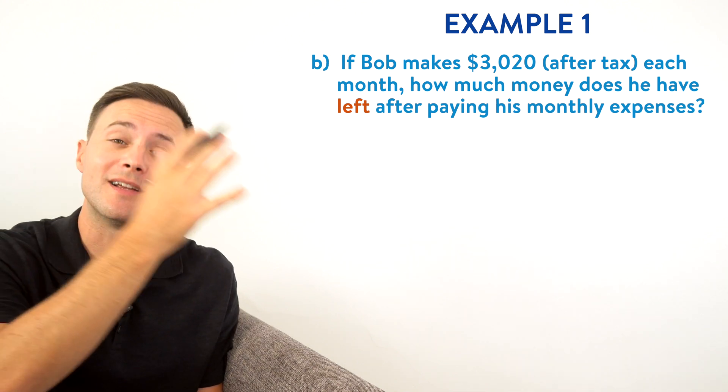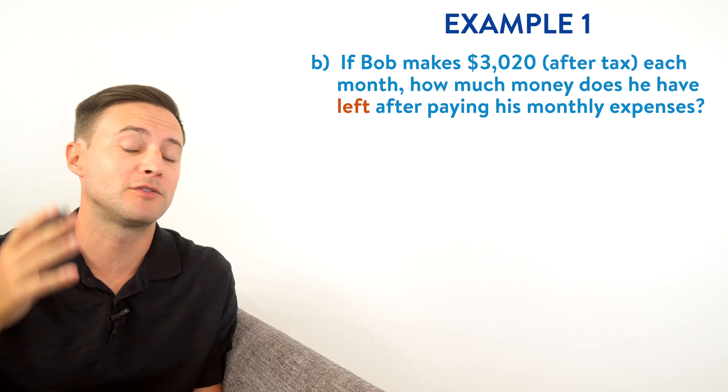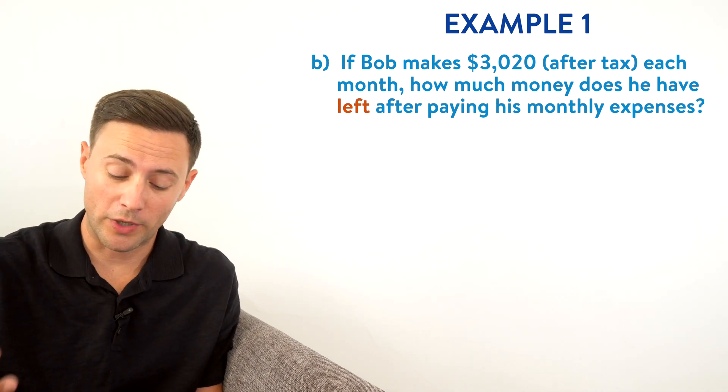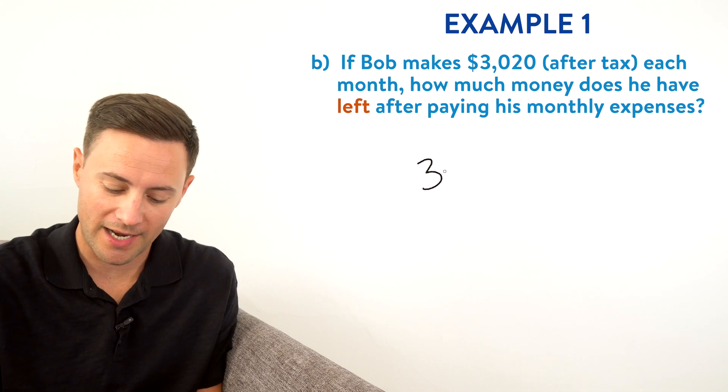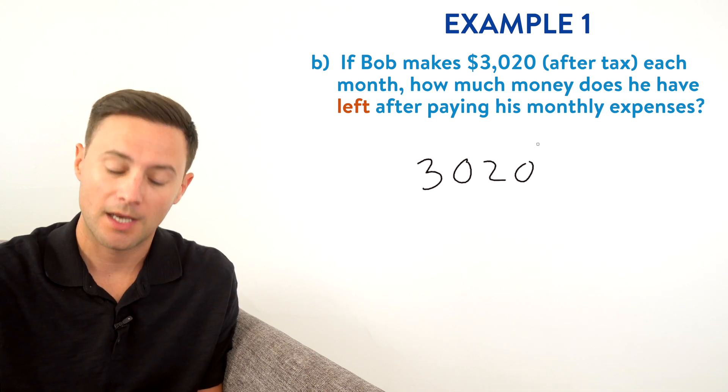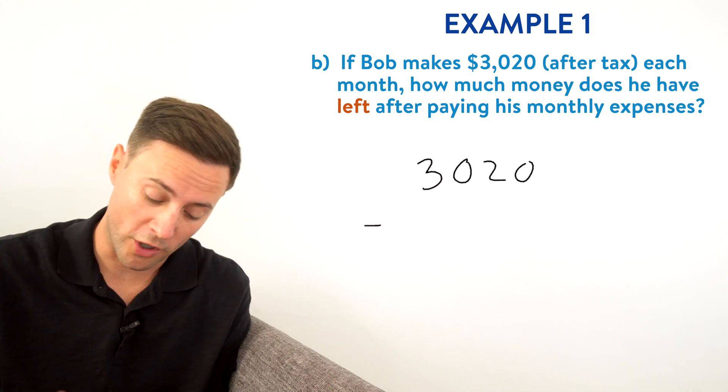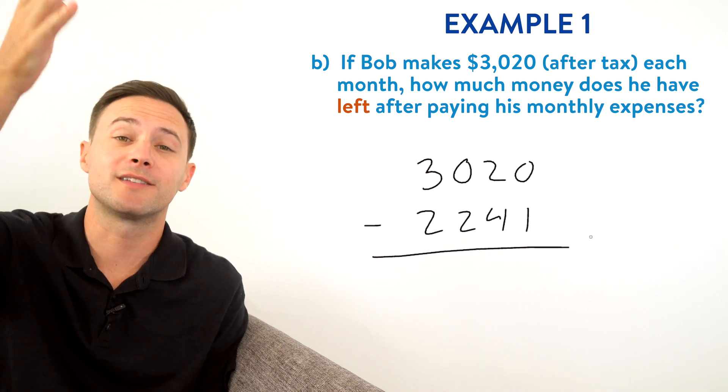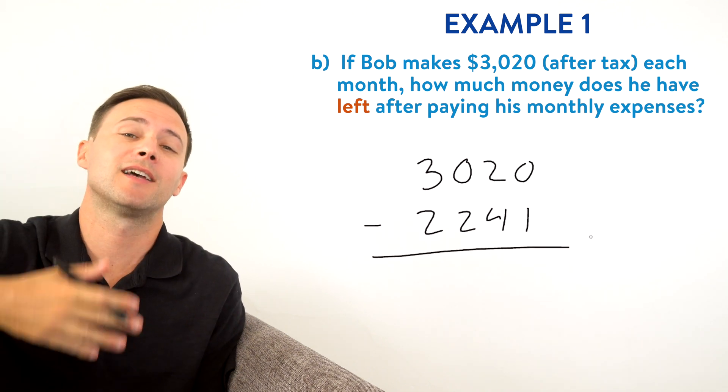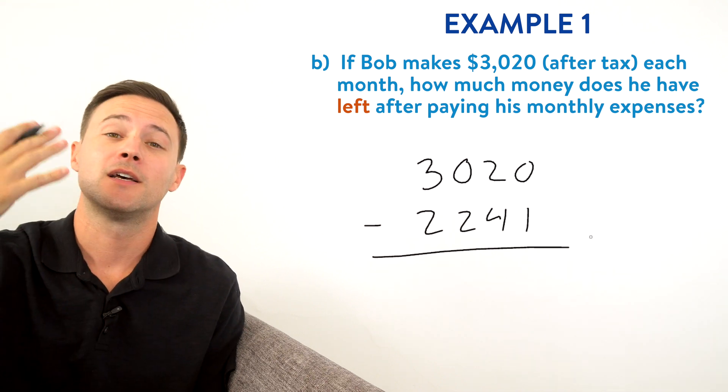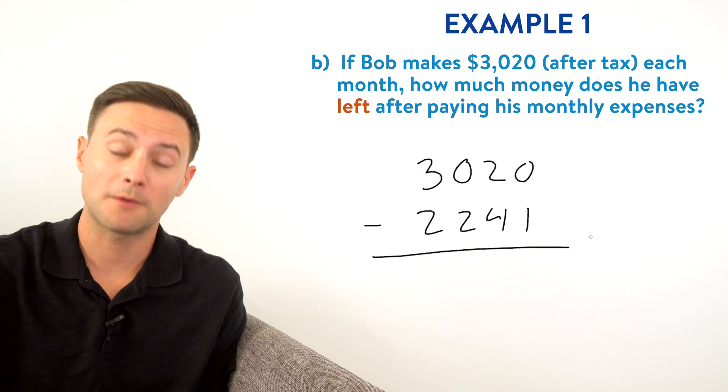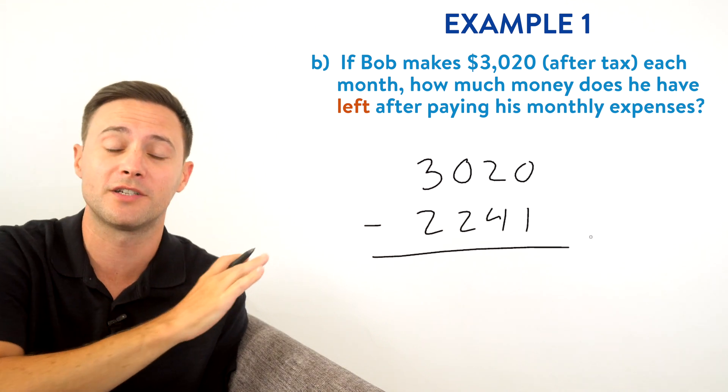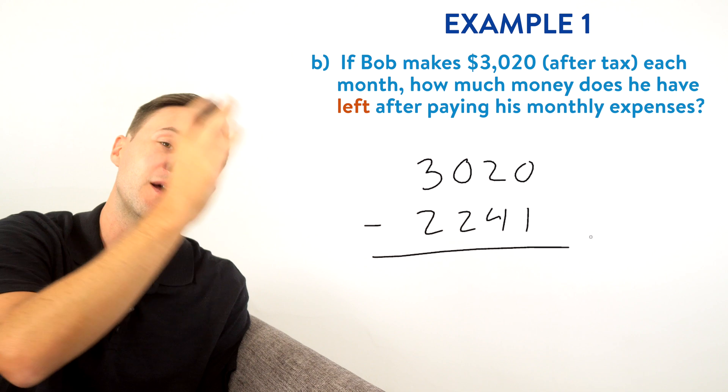And just like with addition, where we lined up the place values, we're going to do the exact same thing with subtraction. So Bob makes $3,020. We're going to put that at the top. And then we're going to subtract his monthly expenses, which were $2,241. And notice again, the ones places lines up the tens, the hundreds and the thousands. So now let's subtract. Well, we need to do first, the ones column, same thing with addition, we start in the column on the right and move our way left. So I got to do zero minus one.